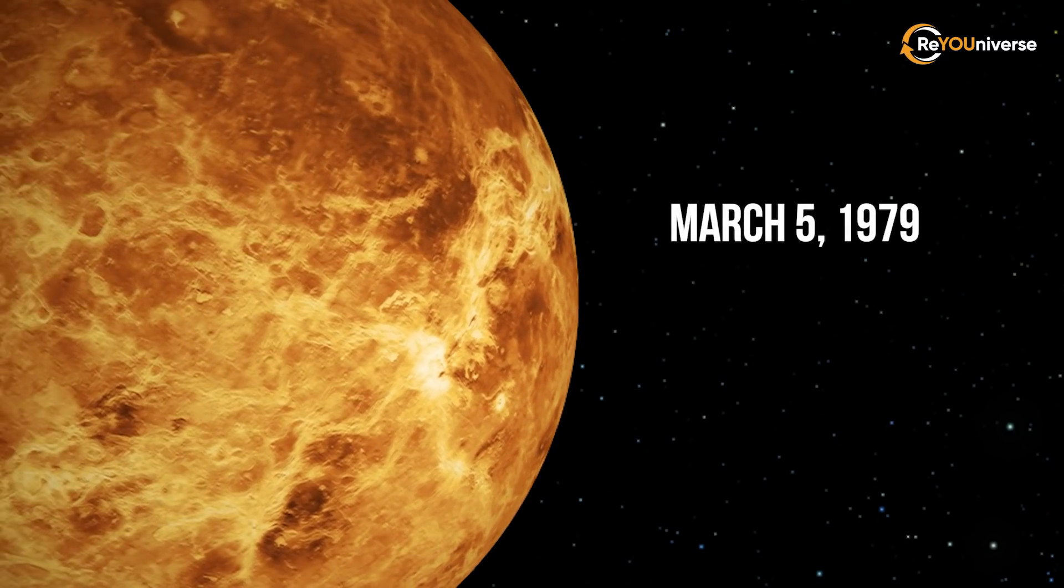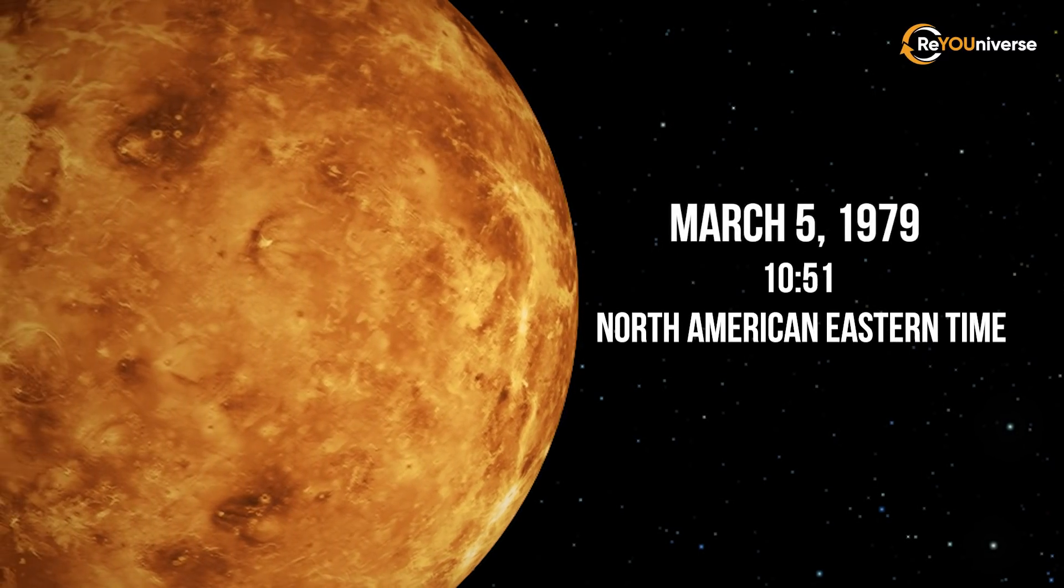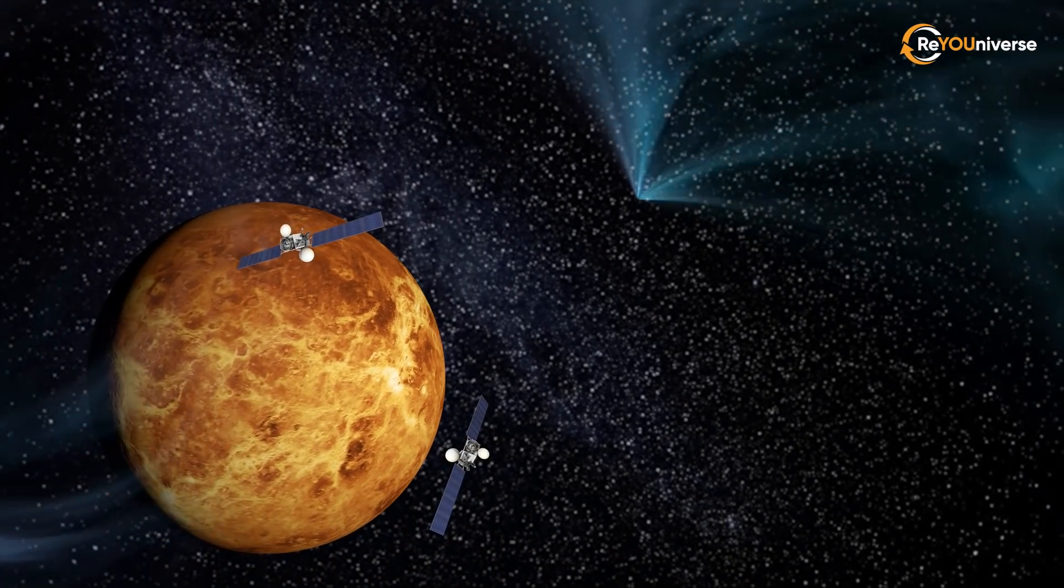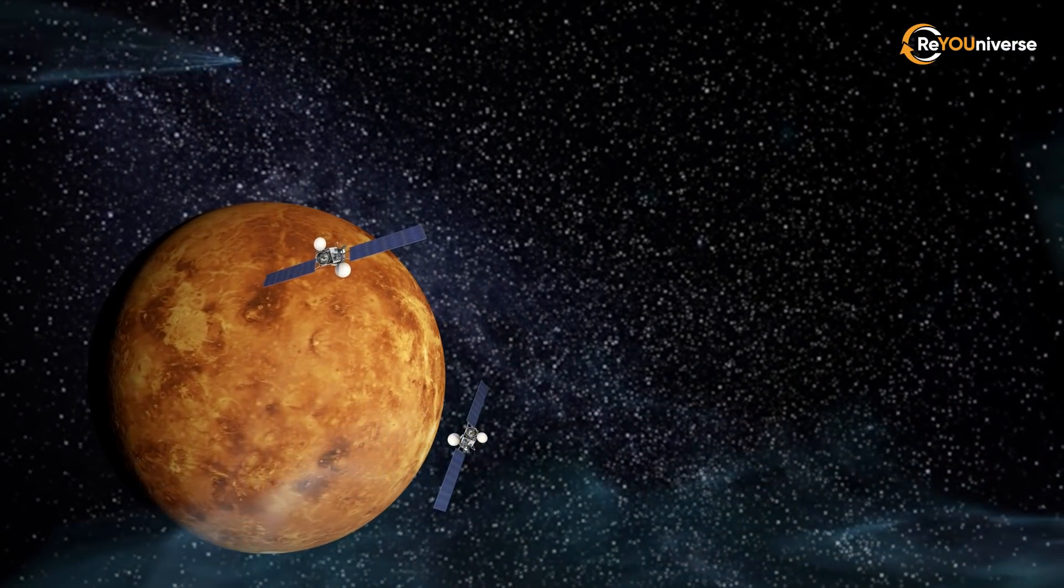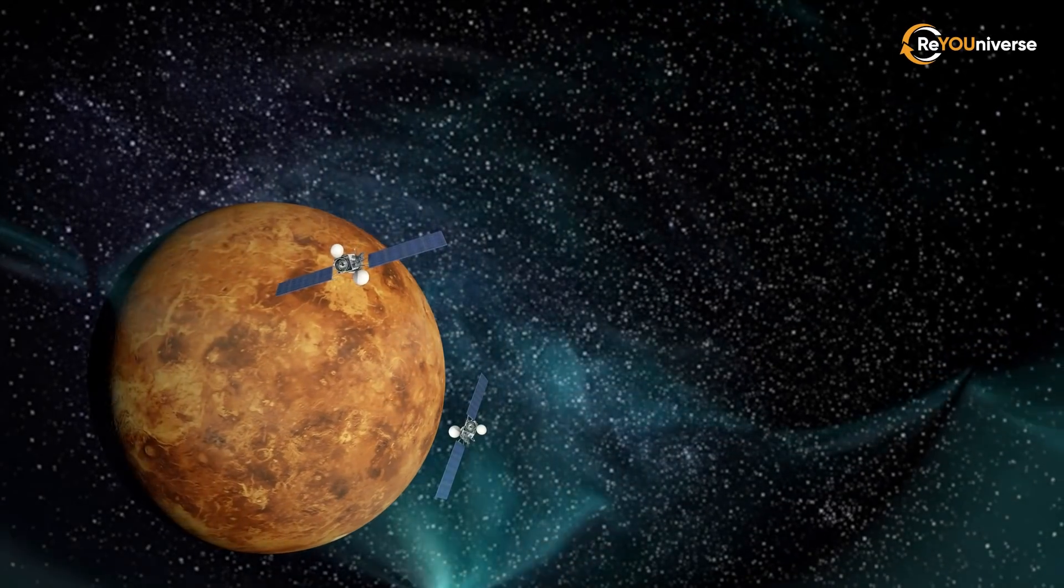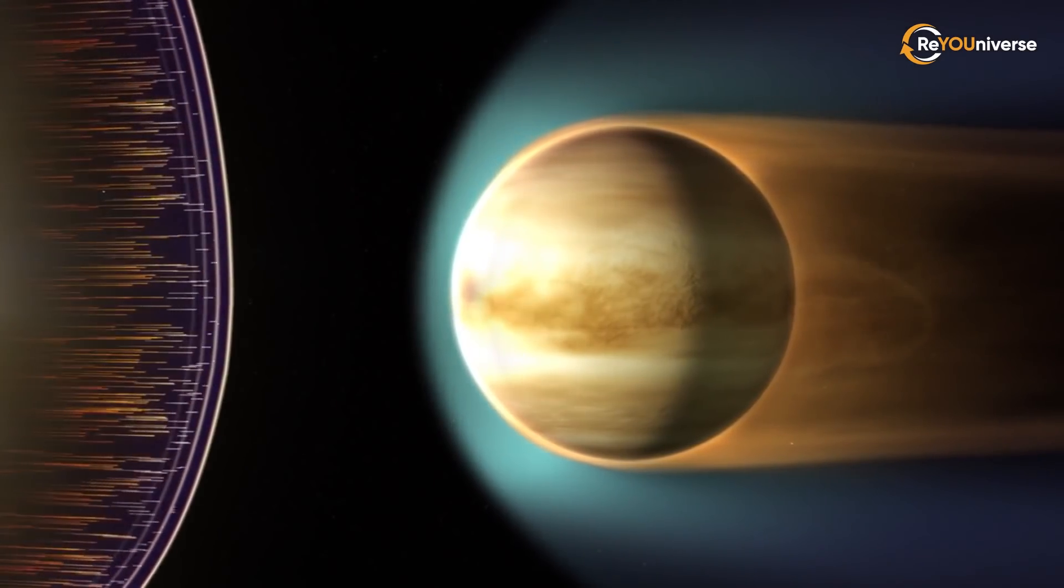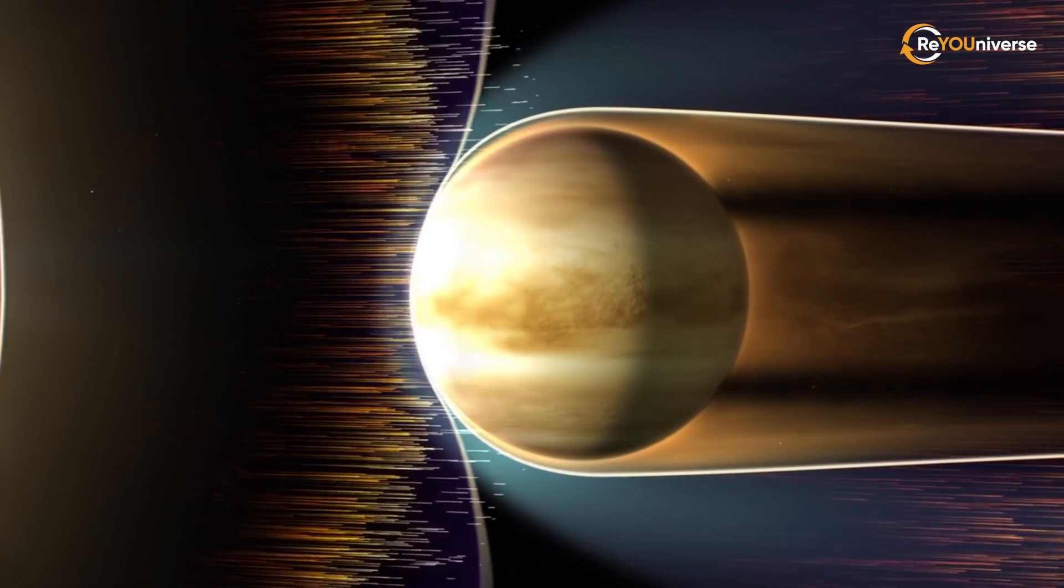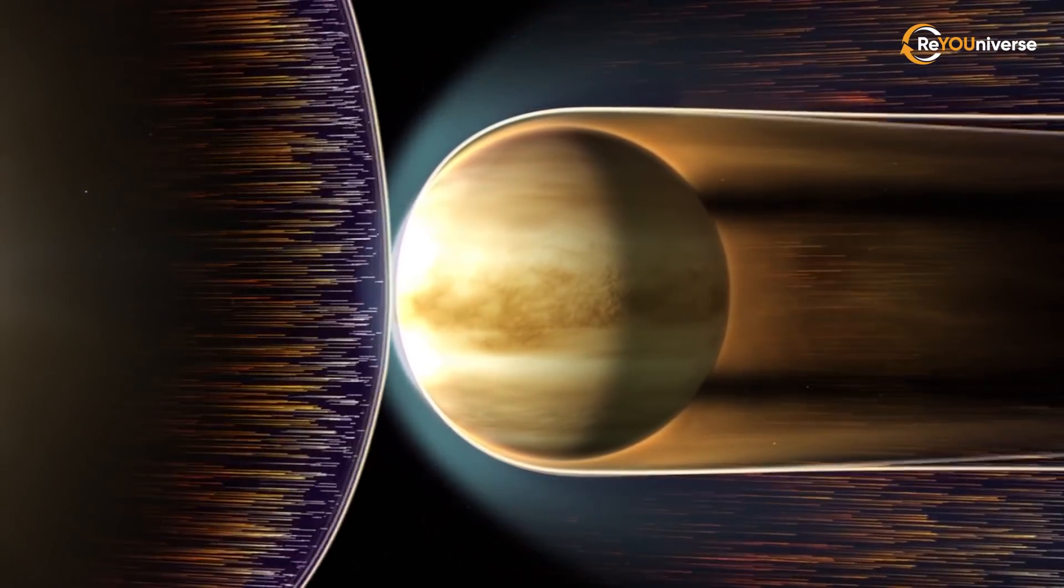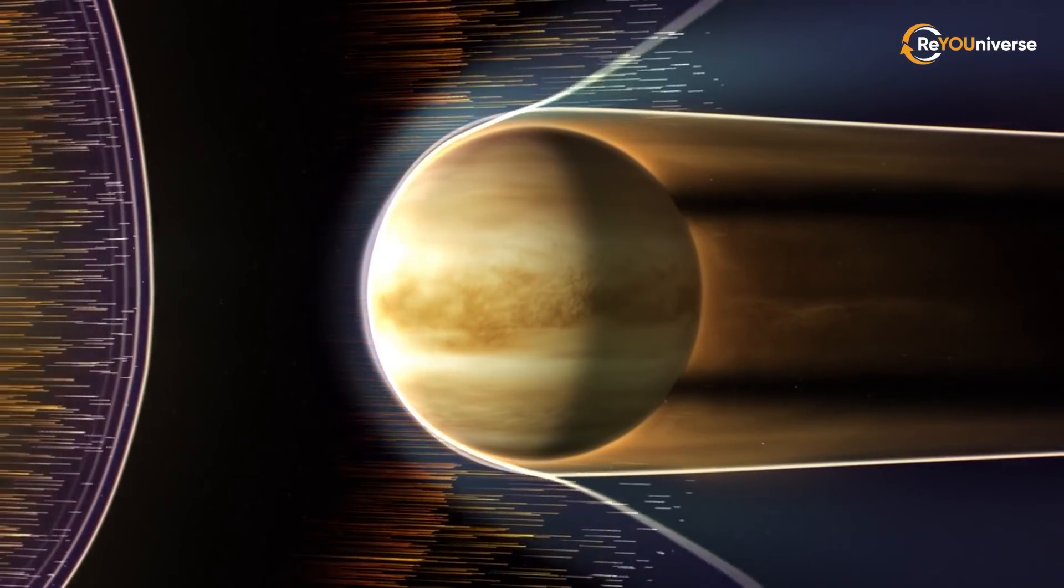On March 5, 1979, at 10:51 North American Eastern Time, two Soviet Venus mission spacecraft, Venus 11 and Venus 12, recorded an intensive gamma radiation burst. From the usual 100 pulses per second, it skyrocketed to 200,000. The frequency increased dramatically in just a fraction of a millisecond.